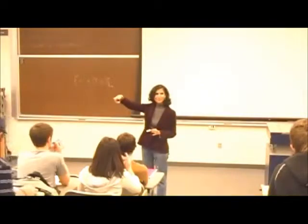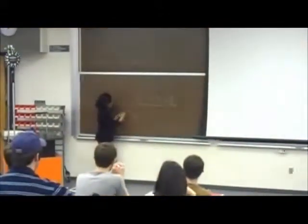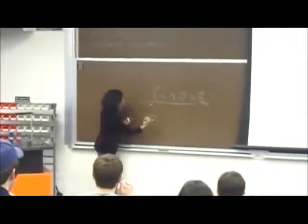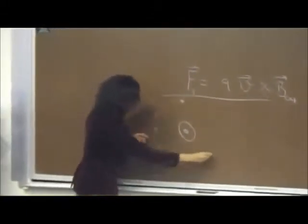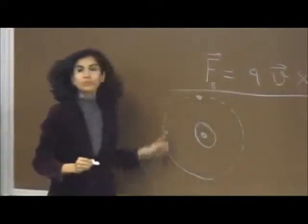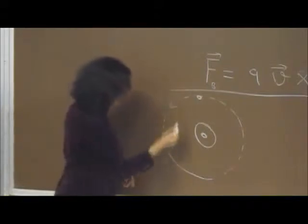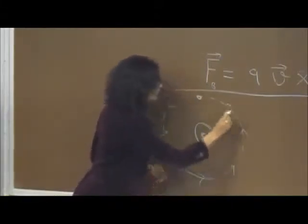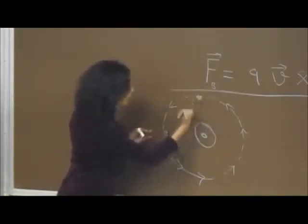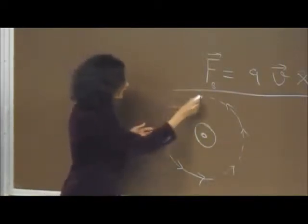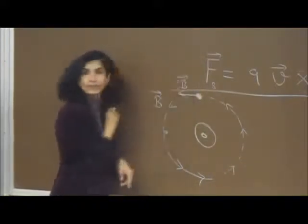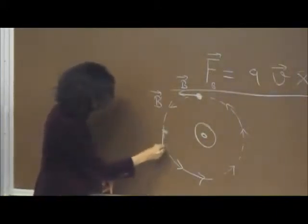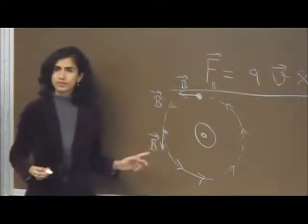Use the right-hand rule for the magnetic field - different from the right-hand rule for cross products. Put your thumb in the direction of current, and your fingers curl around in the direction of magnetic field. If a wire carries current out, and I put my thumb in the direction of current, my fingers curl counterclockwise. Magnetic field lines form closed circles, so at each point the field is tangent to those circles.